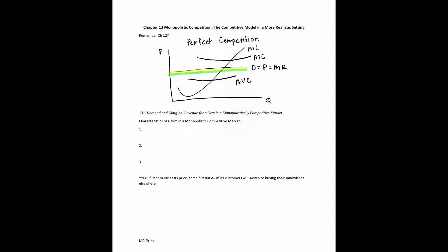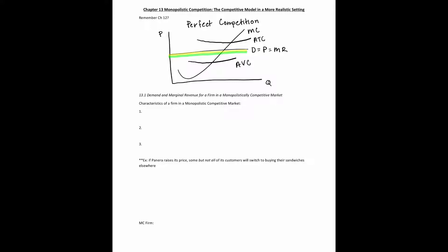In this chapter, we're going to be talking about monopolistic competition. What's special about it is that it has a downward sloping demand curve, similar to what we'd graph back in chapter three. A monopolistically competitive market has three characteristics: many firms — just like perfect competition — differentiated products, and low barriers to entry and exit.